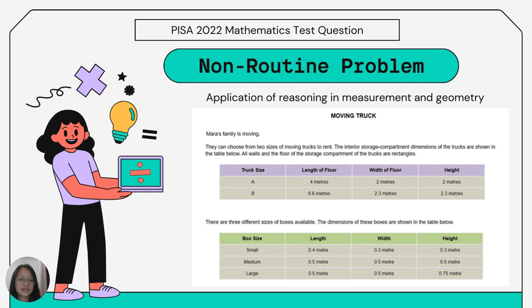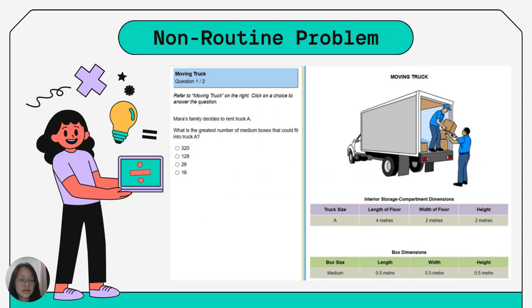There are also three different sizes of boxes available: small, medium, and large. Mara's family decides to rent truck A. What is the greatest number of medium boxes that could fit into the truck?